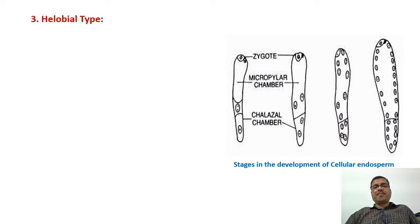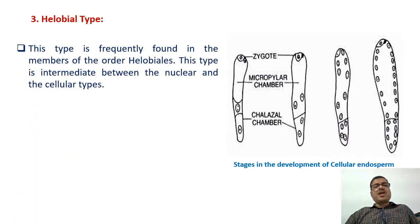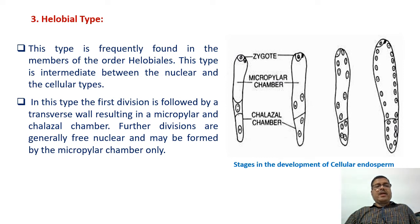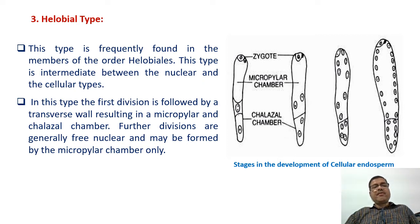Helobial type: this type is frequently found in members of the order Helobiales and is intermediate between the nuclear and cellular types. In this type, the first division is followed by a transverse wall resulting in a micropylar and chalazal chamber. Further divisions are generally free nuclear and may be formed by the micropylar chamber only.